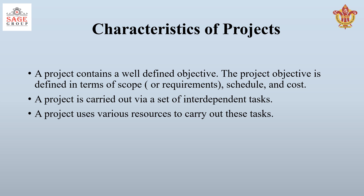Let us now discuss the characteristics of a project. First, a project contains a well-defined objective, defined in terms of scope or requirements, schedule, and cost. Second, a project is carried out via a set of interdependent tasks — a chain of tasks that must be completed to complete the project. Third, a project uses various resources such as men, materials, money, and machines to carry out these tasks.